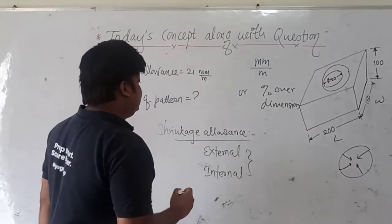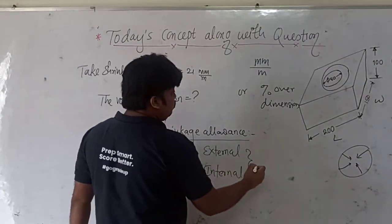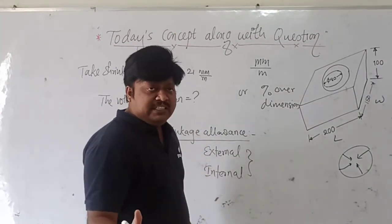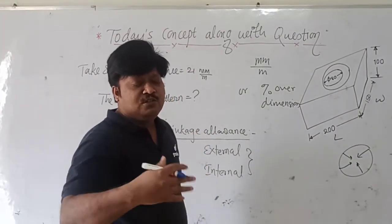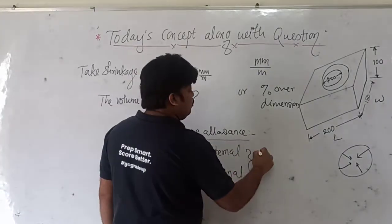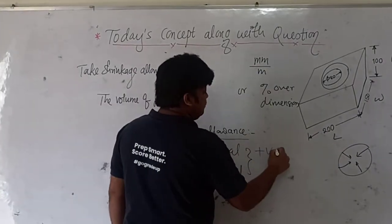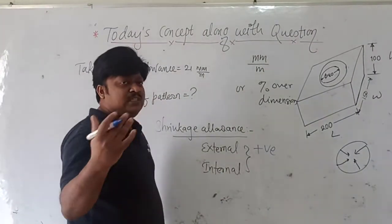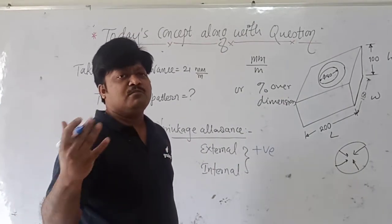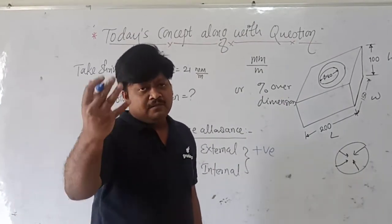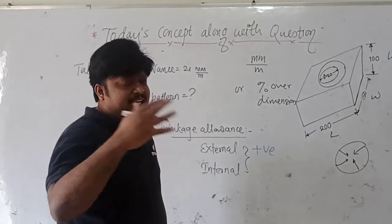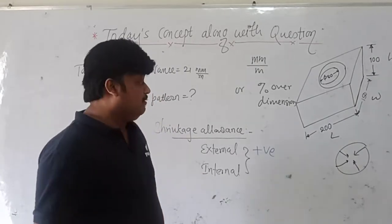That is the reason why, for whichever materials shrink during solidification and cooling, we are going to provide positive shrinkage allowance. Some materials are an exception — for example, bismuth actually expands during solidification. In that case we have negative shrinkage allowance.